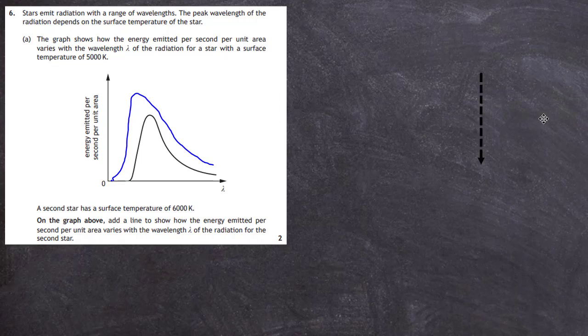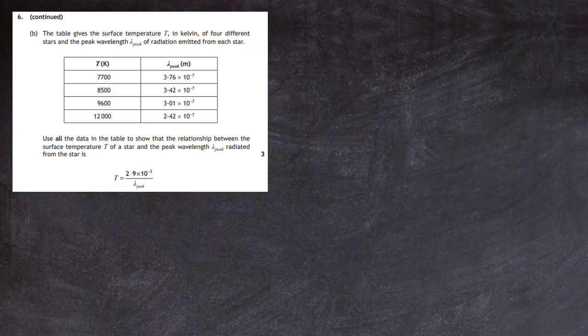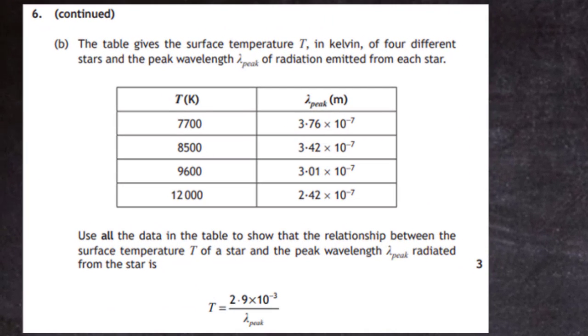Question 6b. We're given a table of results of some experiments. The table gives the surface temperature T in kelvin of four different stars and the peak wavelength lambda peak of the radiation emitted from each star. It says use all the data, and that means all the data because 'all' is in bold letters. Use all the data in the table to show that the relationship between the surface temperature T of the star and the peak wavelength lambda peak radiated from the star is given by that equation or that relationship there.